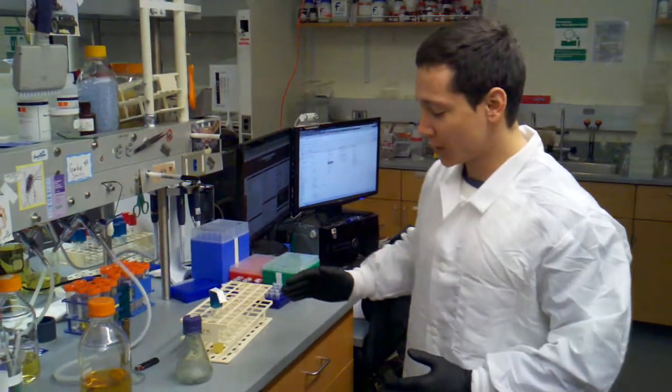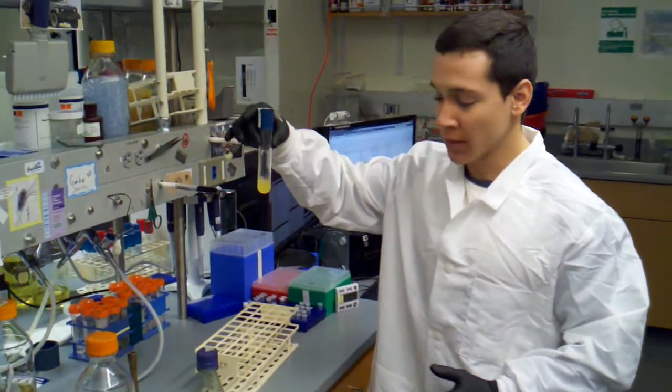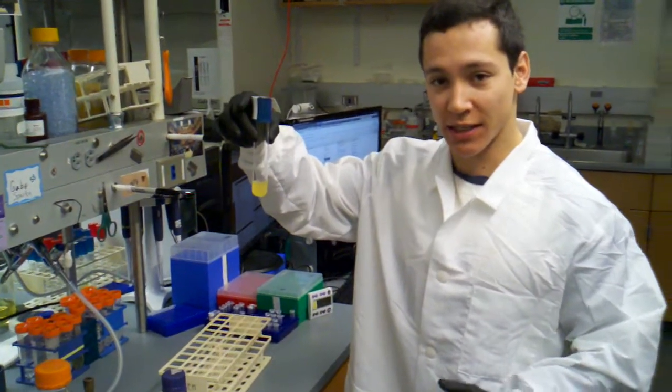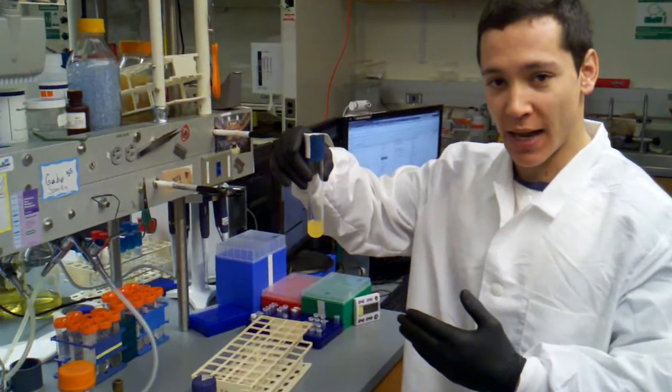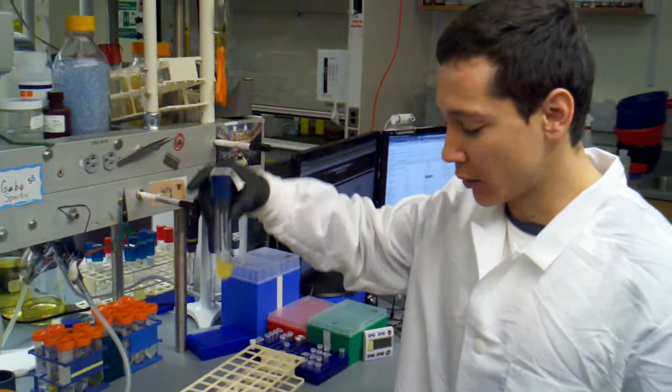The Datsenko-Wanner is used to integrate some sort of linear piece of DNA into the genome. So in order to do that, we'll be starting today with a little bit of culture. This culture has the cells that I want to go into, and it has a helper plasmid called PKD-46 in it, but I didn't start with this culture.